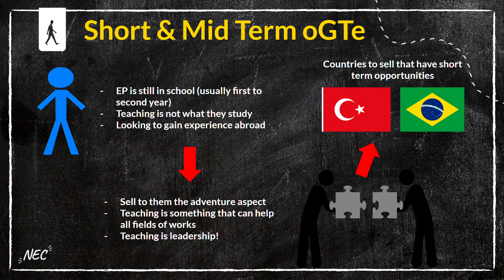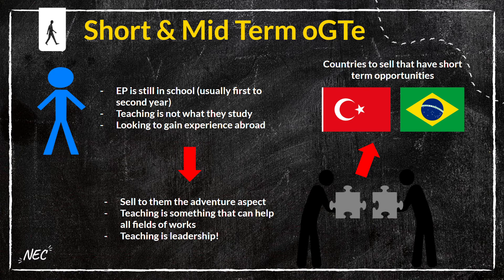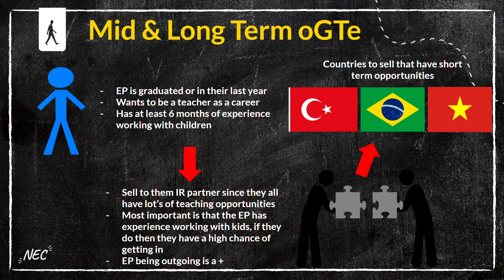For short and mid-term OGTE, this EP is similar — still in school, usually first or second year. Teaching is usually not what they study, and they're looking to gain experience abroad or have an adventure. It's important to sell them the adventure aspect. Even though teaching may not be relevant to their studies, teaching builds leadership and resilience — something recruiters and employers really value, as it shows you can work with many different age groups. There are several countries that are very popular for short-term teaching opportunities.